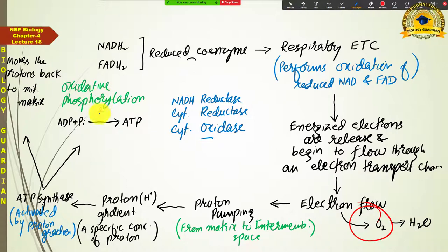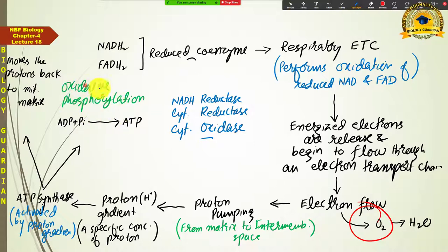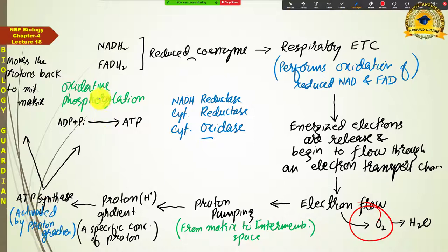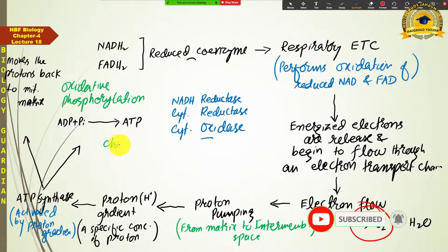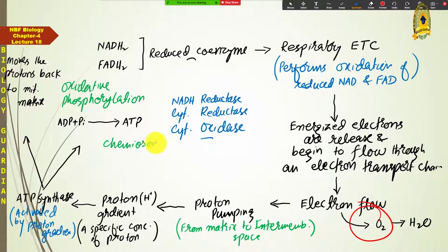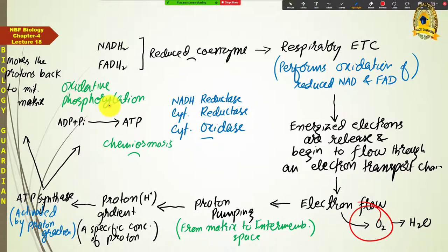Since this phosphorylation occurs in the presence of oxygen rather than light, it is called oxidative phosphorylation. Remember: the ATP generation process is called oxidative phosphorylation, and the mechanism involved in that process is called chemiosmosis. The mechanism of ATP synthesis involving electron flow is called chemiosmosis.